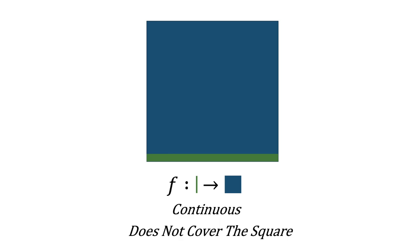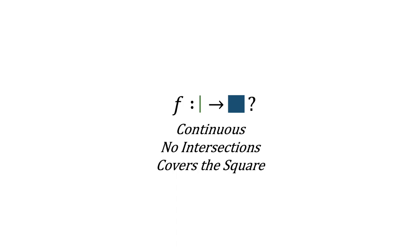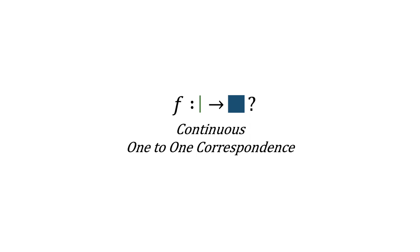This brings us to the first way we can reframe the question of whether a line is equal to a square in some sense. Is there a function from a line to a square that is continuous, does not intersect itself, and completely covers the square? We can actually combine the last two statements and ask more succinctly: is there a continuous one-to-one function between a line and a square?